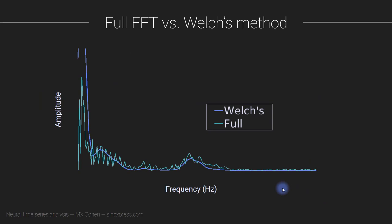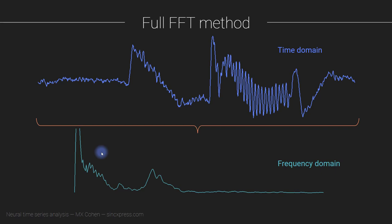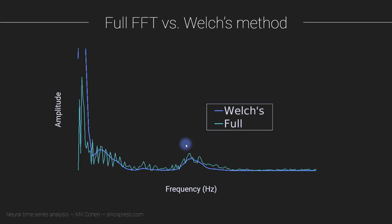Here you see a comparison of Welch's method and the full FFT. The cyan line is the power spectrum from one Fourier transform over the entire signal, and the blue line is the result of Welch's method. You can see they are overall quite similar, but Welch's method is much smoother. That is generally the result of Welch's method — it smooths out the power spectrum quite a bit.